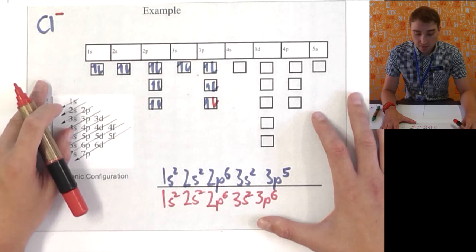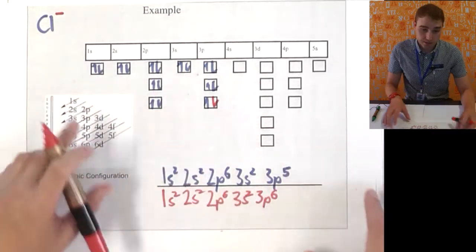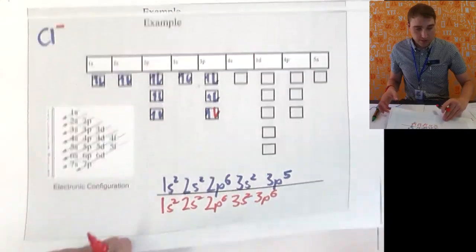In these cases, for non-metals, you're filling up outer shells. So, you're adding electrons, which is going to give you negative charges.